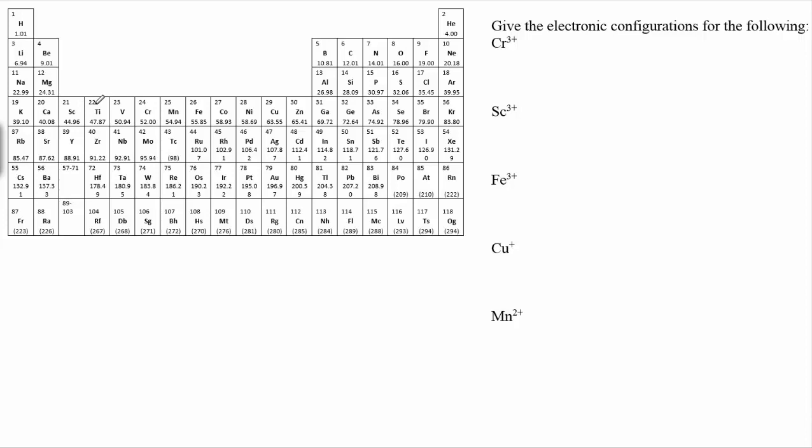If we look at scandium right here, we did the noble gas configuration. So the last noble gas we cross for scandium would be argon. And then potassium and calcium here represent the 4s electrons, so that's 4s2. And then scandium is the 3d's, one behind, and we get 3d1.